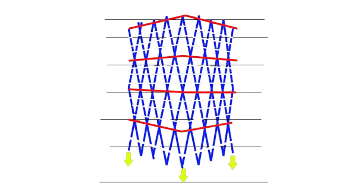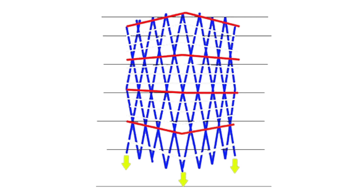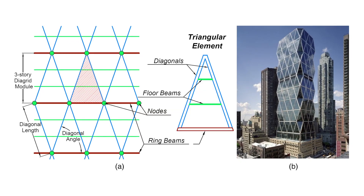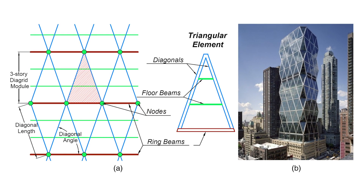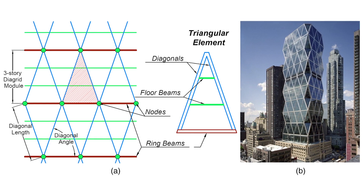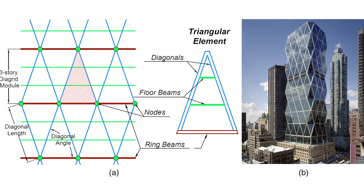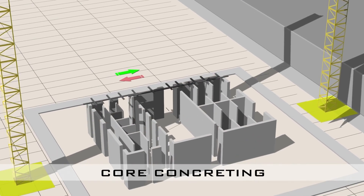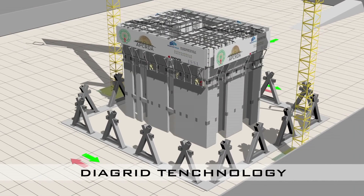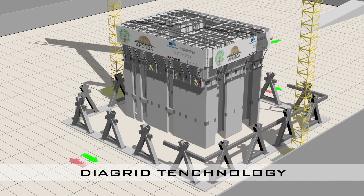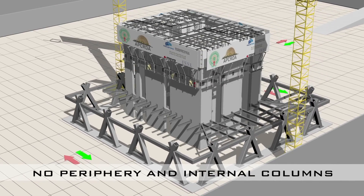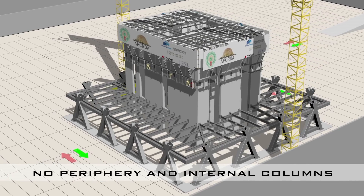However, the diagrid structural system has become more common these days for tall steel buildings due to its structural efficiency and aesthetic look provided by the unique geometric configuration of the system. Diagrid is an exterior structure system where all perimeter vertical columns are eliminated and consist of only diagonal members or sloped columns on the exterior of the building.